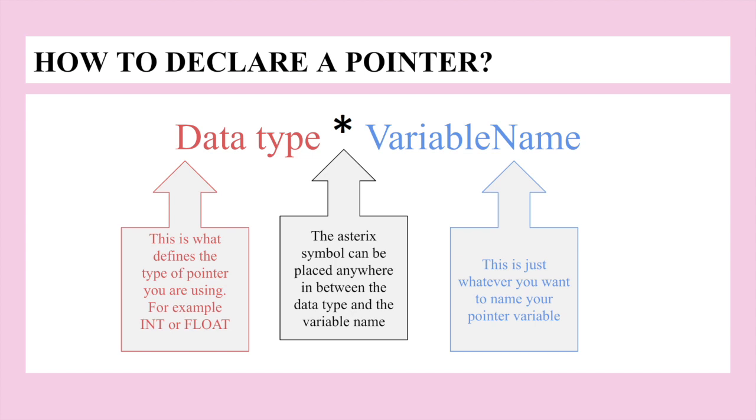So let's say I had int asterisk cows, then cows is pointing to an integer variable, so I know that I would be having like a set number of cows on this farm or whatever.